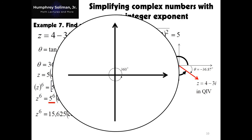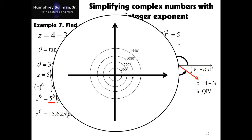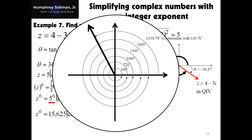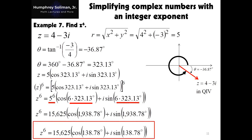It would be better to use the coterminal angle of this large angle. Looking at the complex plane, 360 degrees is 1 rotation, 720 for 2, 1080 for 3, 1440 for 4, and 1800 for 5 complete rotations. We can see that 1938.78 degrees is coterminal with 138.78 degrees. So our final answer is z raised to 6 equals 15,625 times the quantity cosine 138.78 degrees plus i times sine 138.78 degrees.